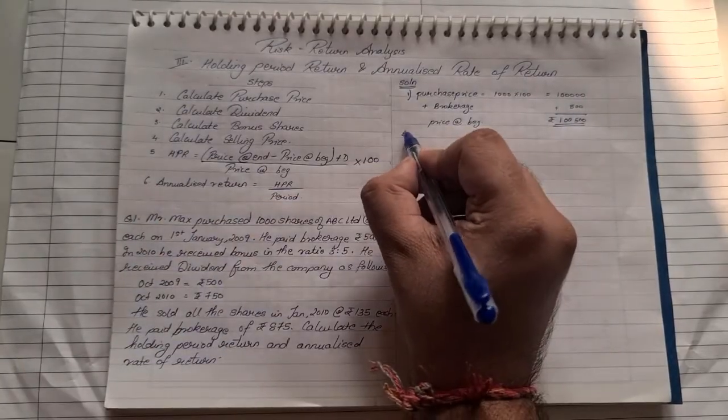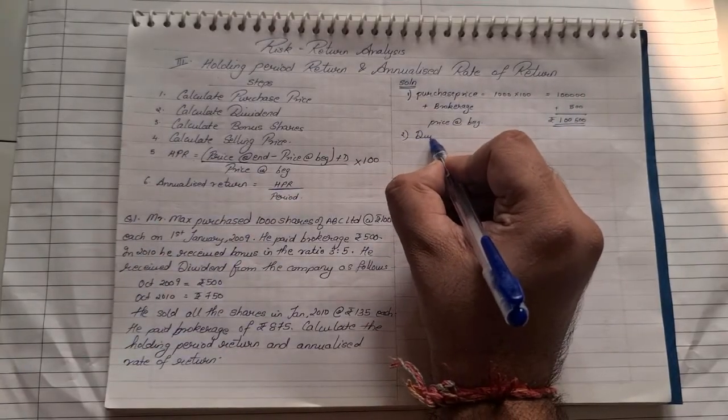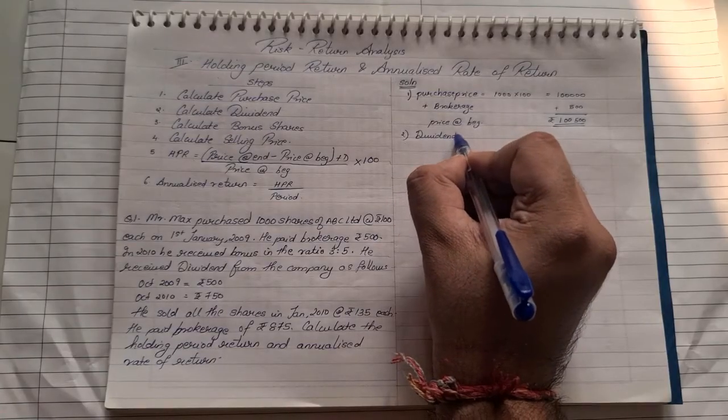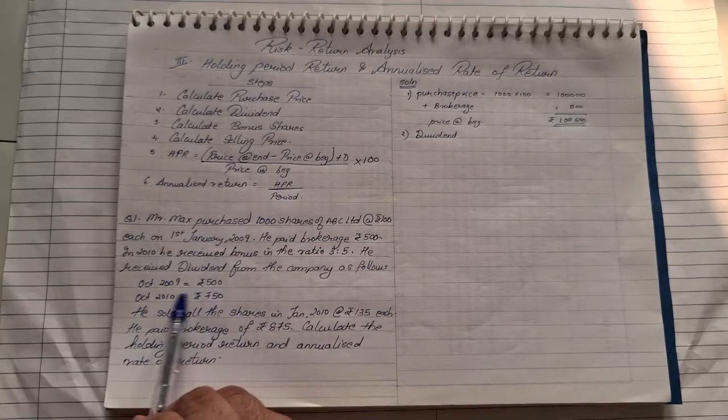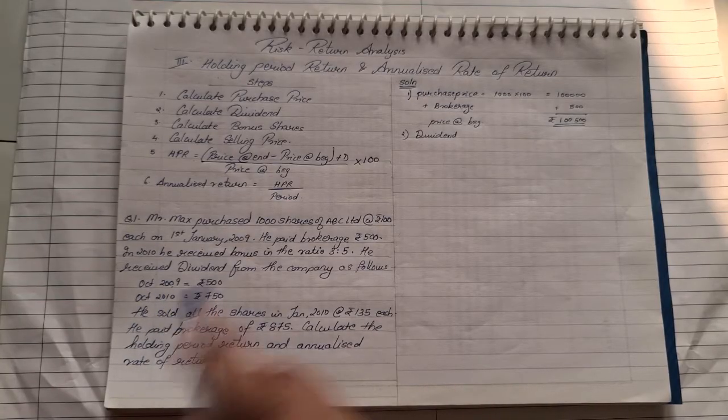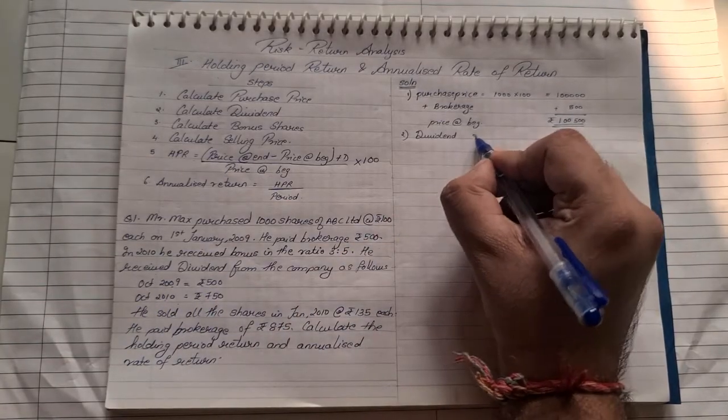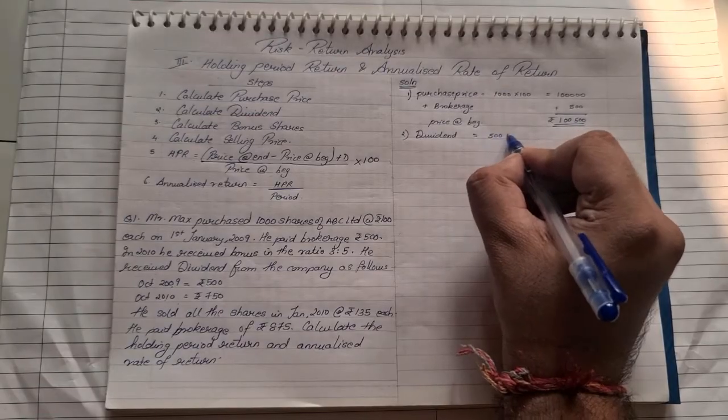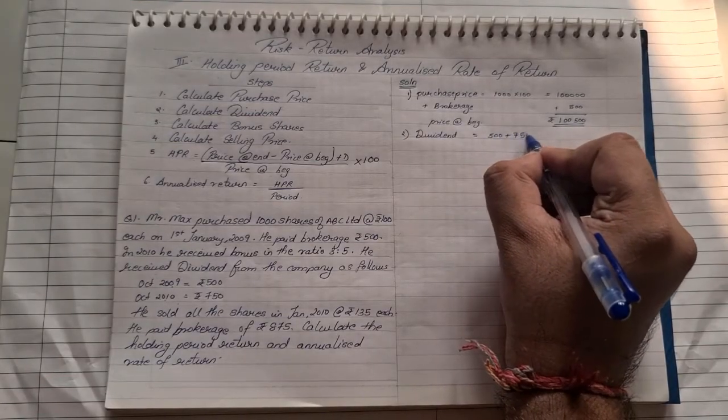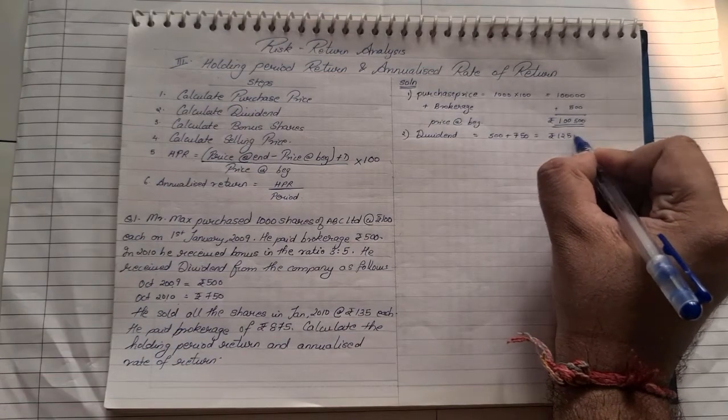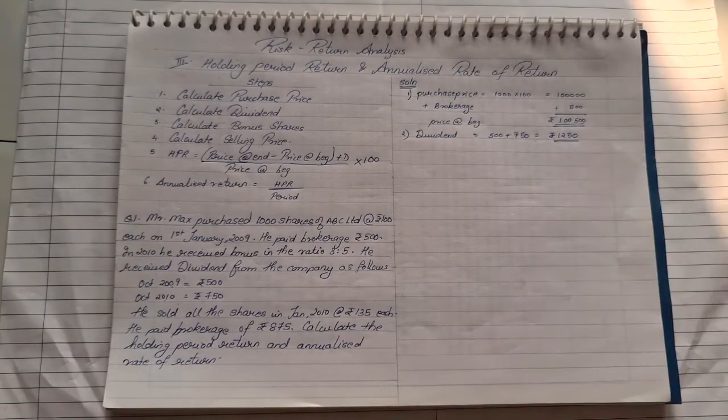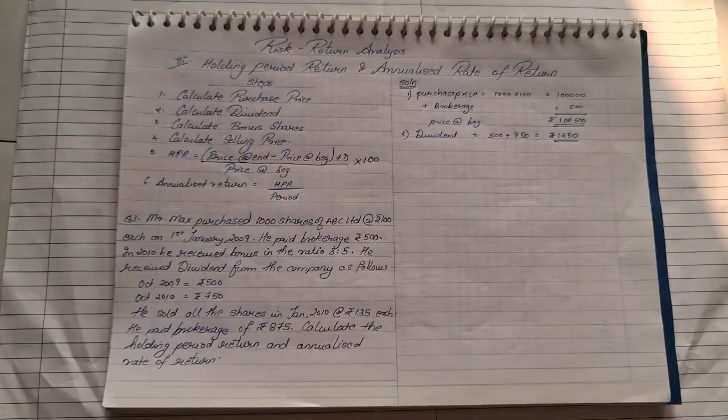Second, we need to calculate the dividend. Now, in the question, they have already given a dividend that he has received dividend for 2 years, for 2009 and 2010. So dividend is equal to Rs. 500 plus Rs. 750 which comes to Rs. 1250. So that's our second value. We found the purchase price. We have found the dividend.